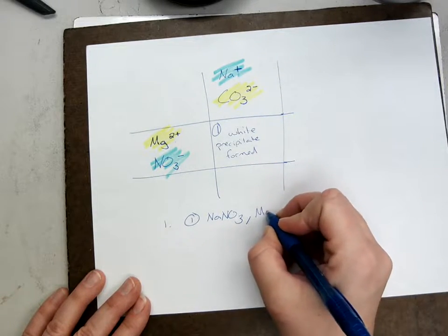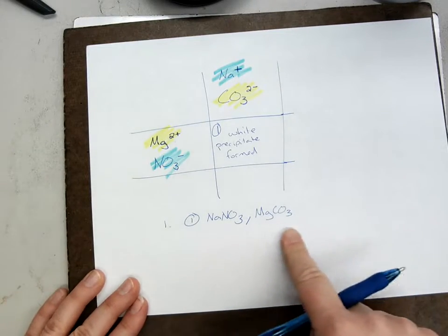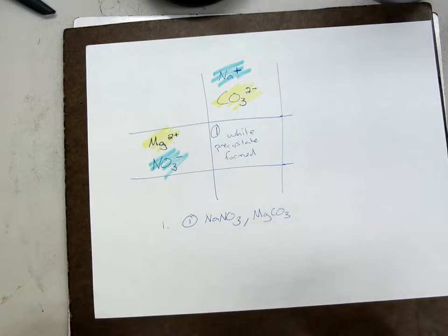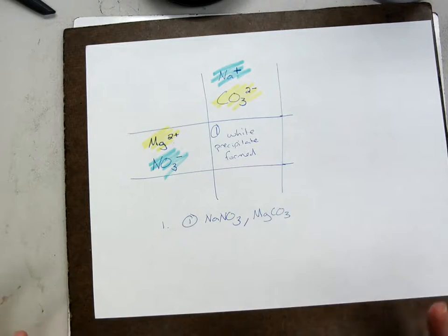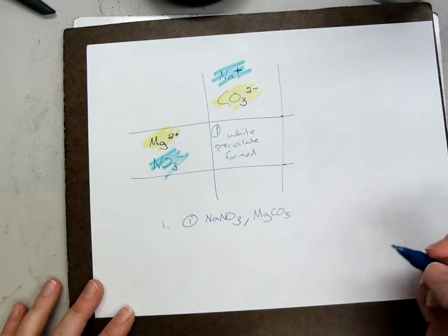MgCO3. So that's the answer to question one, or calculation one. What are my possible products? Those are my possible products. And I would do that for the other boxes as well.